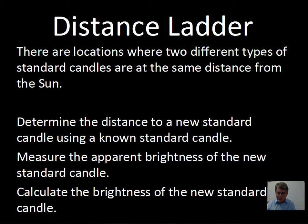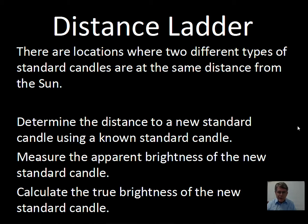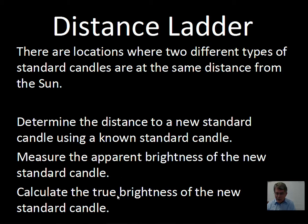Astronomers can then calculate the true brightness of the new standard candle. The distance ladder is assembled one rung at a time, with the rungs close to the Milky Way — close to the Sun even — being done first. Determine their brightness, and then use these known standard candles to find the distance to the new standard candle. Measure the apparent brightness of the new standard candle, calculate its true brightness, and then use it further away. This will be a brighter standard candle, allowing astronomers to calculate distances to objects more distant than the old standard candles could reach.